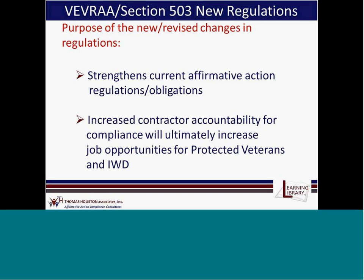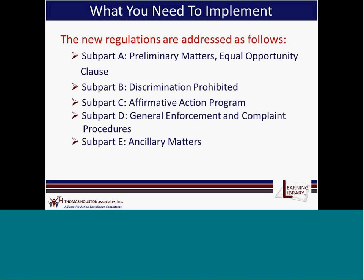The revised changes in the regulations have to do with strengthening the current affirmative action regulations and obligations of federal contractors overall. The goal was that increased contractor accountability for compliance will ultimately increase job opportunity for protected veterans and individuals with disabilities. The regulations are addressed in different sections: Subpart A addresses preliminary matters and the Equal Opportunity Clause; Subpart B addresses prohibited discrimination; Subpart C addresses the affirmative action program requirements; Subpart D addresses general enforcement and complaint procedures; Subpart E addresses ancillary matters and is mostly informational, with not a whole lot that federal contractors have to do.